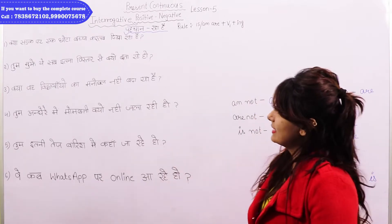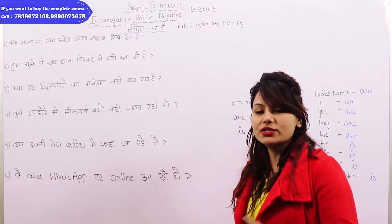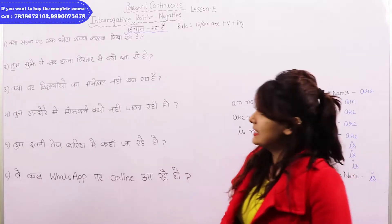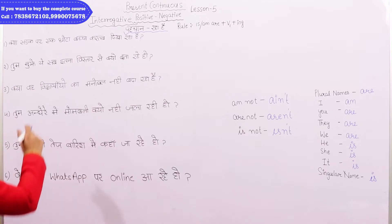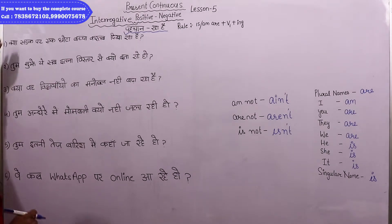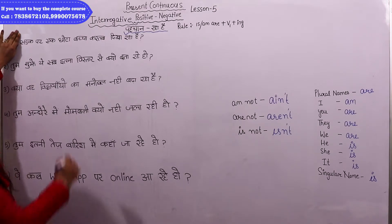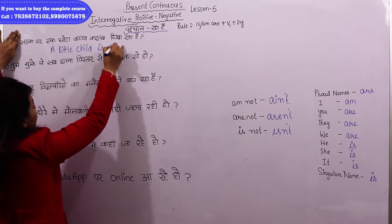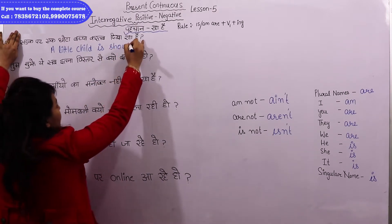Sentence number one: 'Kya sadak par ek chhota bachcha kartab dikha raha hai?' I have used some small vocabulary words so you learn how to use them. The sentence is about a little child on the road showing a feat/trick. If I hide the question word 'kya', the remaining sentence is: 'sadak par ek chhota bachcha kartab dikha raha hai' — A little child is showing feats on the road.